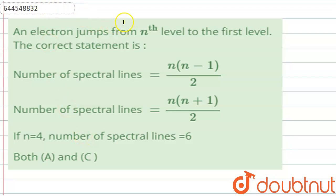The question given here is: an electron jumps from nth level to the first level. The correct statement is - there are four options given in which the number of spectral lines formula is given, and we have to find which of these is correct.